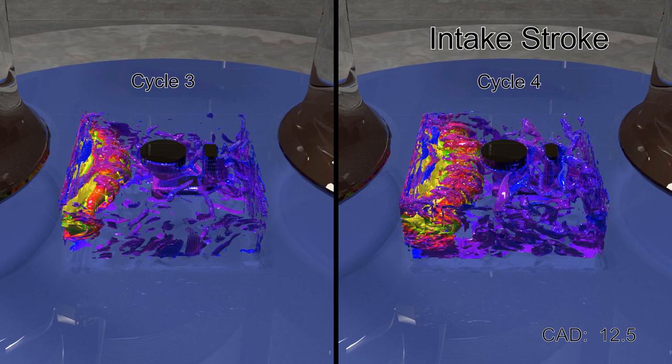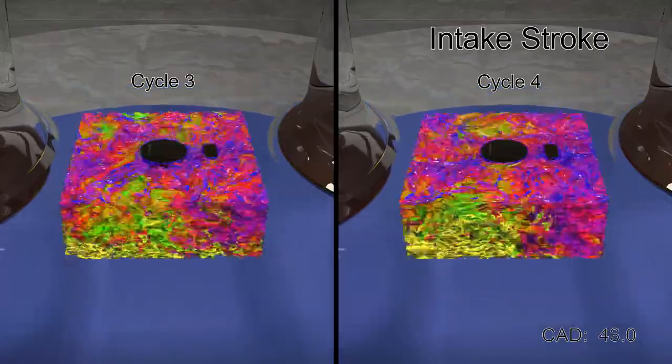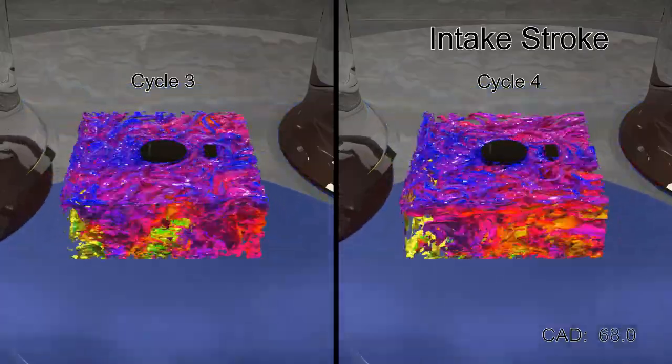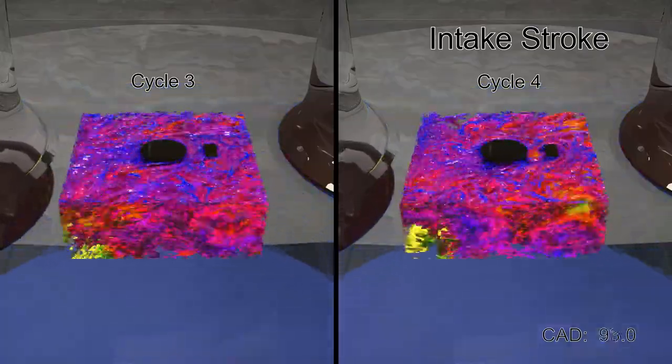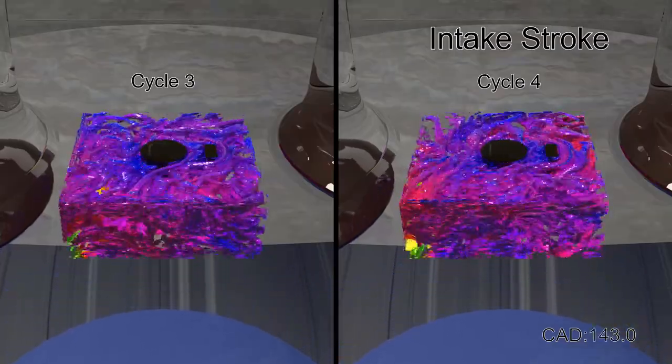The interaction of the fast-moving intake jet with the spark plug enhances the level of turbulence in the chamber. We see smaller turbulence structures early in the stroke, while later these structures appear larger. This seems to match our theoretical understanding of the fluid, where faster turbulence has smaller vortices and slower turbulence has larger ones.